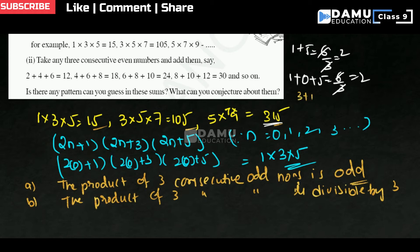So, 3+1+5 = 9, and 9 divided by 3 equals 3. So this sum is divisible by 3, meaning 315 is also divisible by 3.